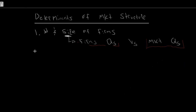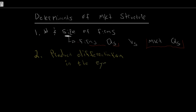Our second determinant is whether or not we have product differentiation — and I want to add a caveat to this: product differentiation in the eyes of the consumer. This isn't something you'll usually see in a textbook, but it's important to add. Product differentiation means is there a difference between the products from the consumer's perspective.